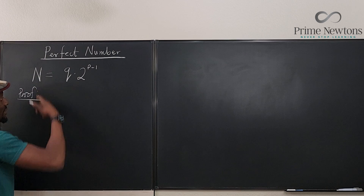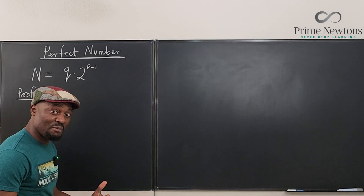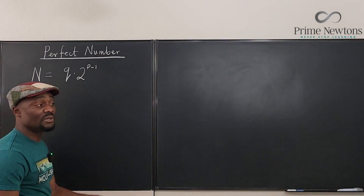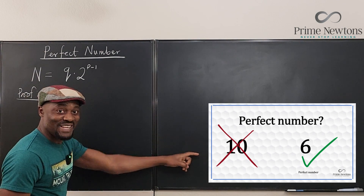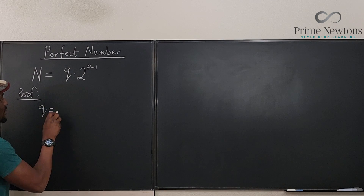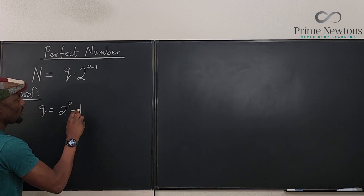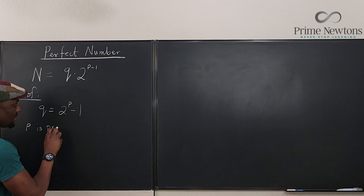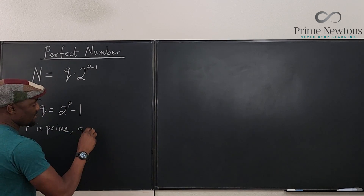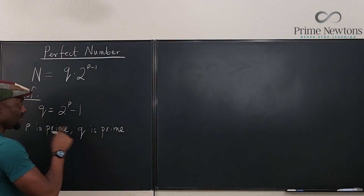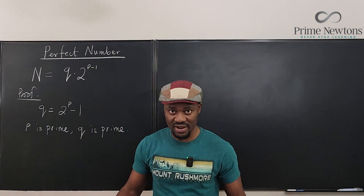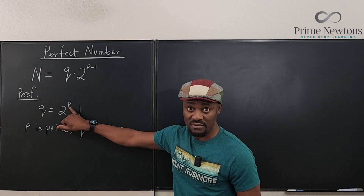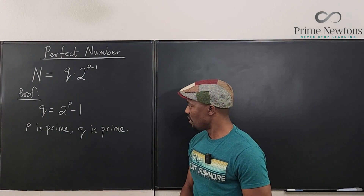We want to prove that n is a perfect number. Remember the definition of a perfect number: the sum of the proper divisors is equal to the number itself. Here we say that q is equal to 2 raised to the power p minus 1, and both q and p are prime numbers. It is important that these two are primes, otherwise the number will not be perfect. You obtain the second prime number q using the first prime number p.